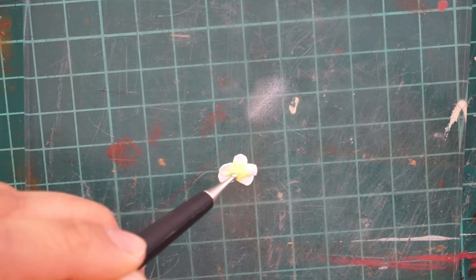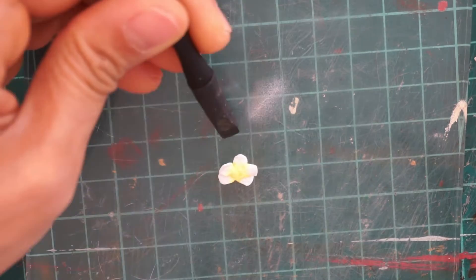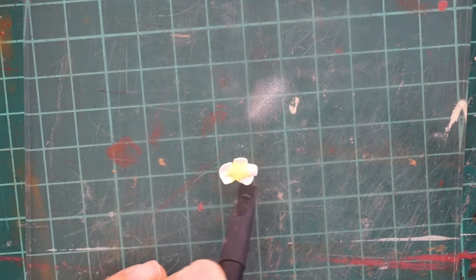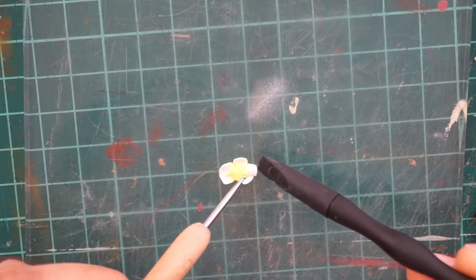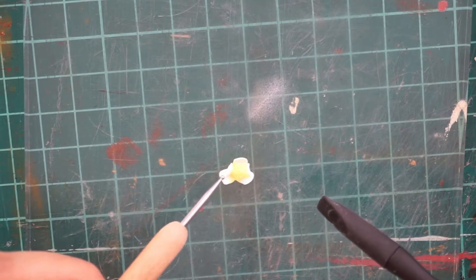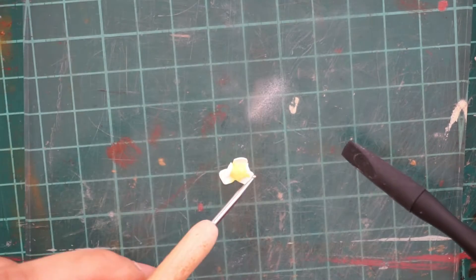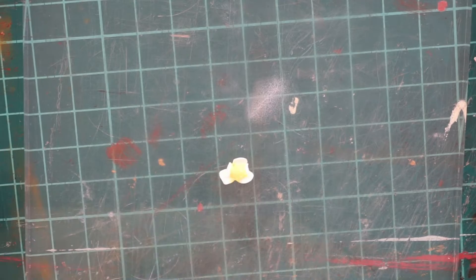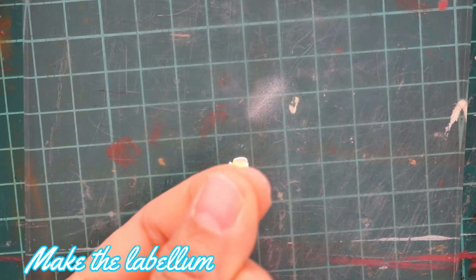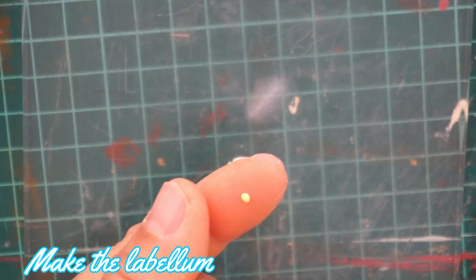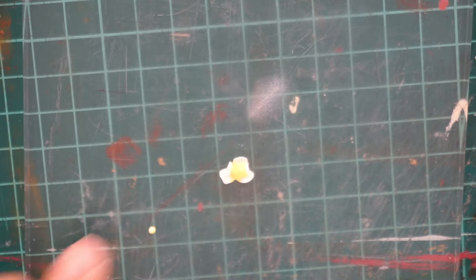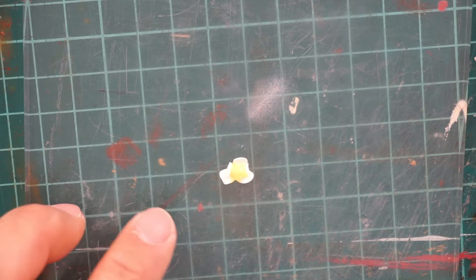Then put the two petals on top of the first layer and fold the outer edge of the petal. To make the labellum, just take a small piece of clay and roll it with your index finger and thumb.